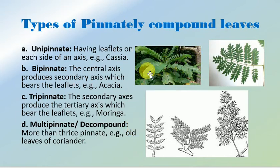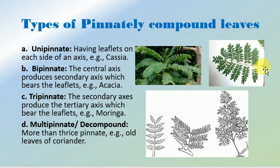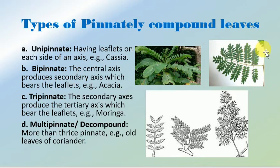In this first image we can see the unipinnately compound leaf. In the second image the bipinnately compound leaf is clearly shown — this is the first branch, this is the second branch, and the leaflets are arranged and divided on the secondary branch.